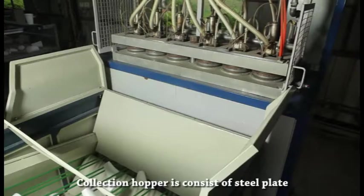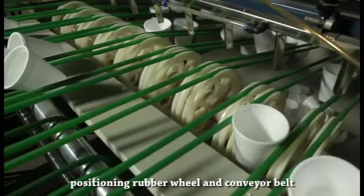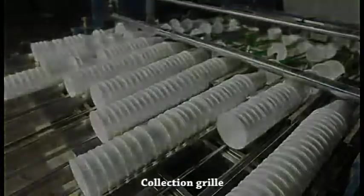The collection hopper consists of steel plate, positioning rubber wheel, and conveyor belt.